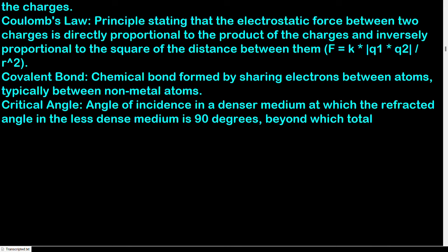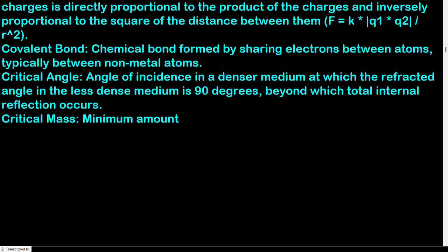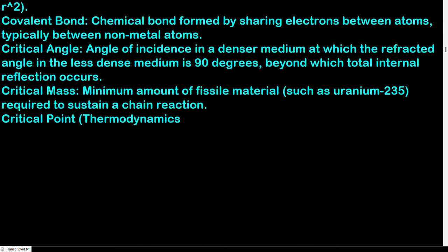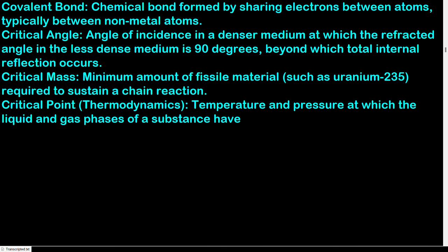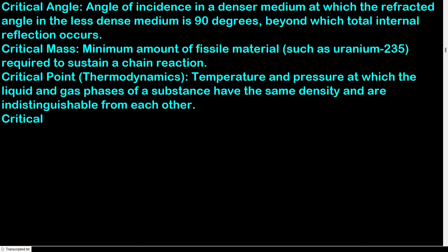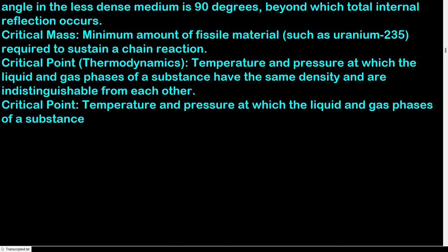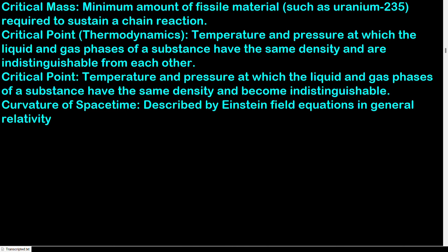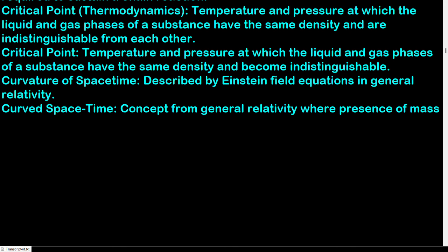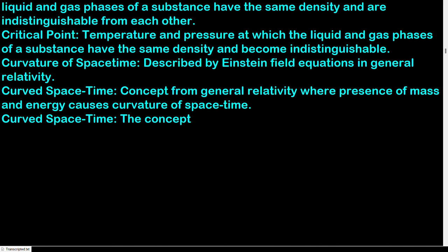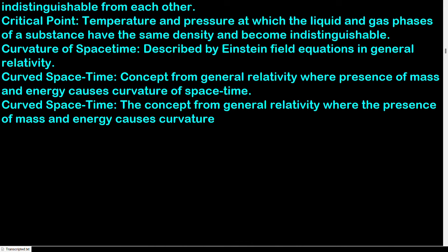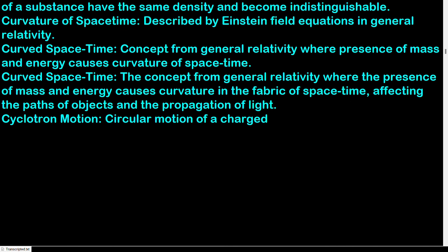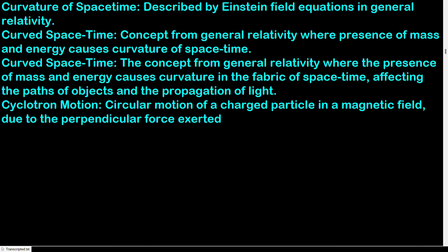Critical mass: minimum amount of fissile material (such as uranium-235) required to sustain a chain reaction. Critical point: temperature and pressure at which the liquid and gas phases of a substance have the same density and become indistinguishable. Curvature of spacetime: described by Einstein's field equations in general relativity — the presence of mass and energy causes curvature in the fabric of spacetime, affecting the paths of objects and the propagation of light. Cyclotron motion: circular motion of a charged particle in a magnetic field due to the perpendicular force exerted by the field on the moving charge.